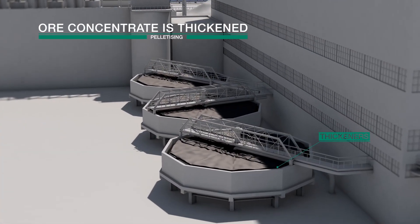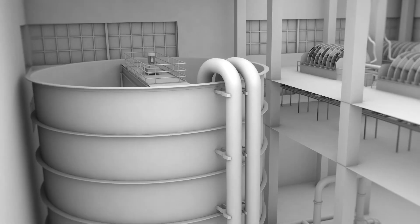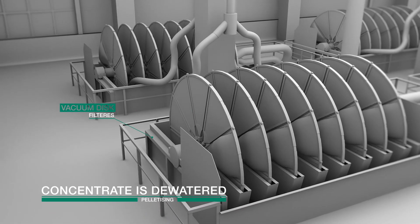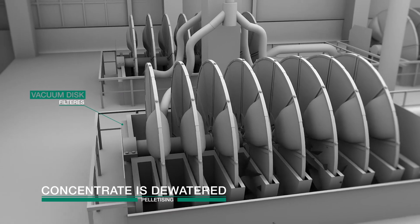The iron ore concentrate is thickened, and the slurry is pumped to the vacuum disc filters, where the concentrate is dewatered.